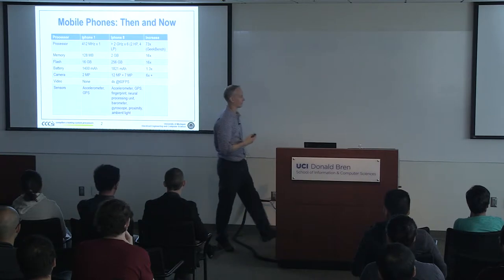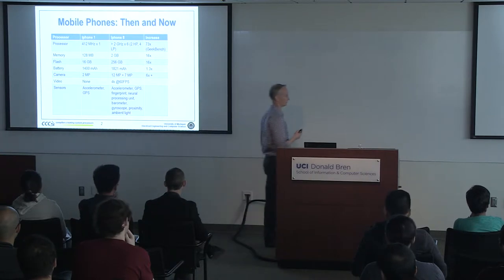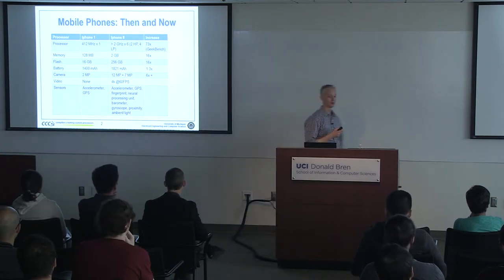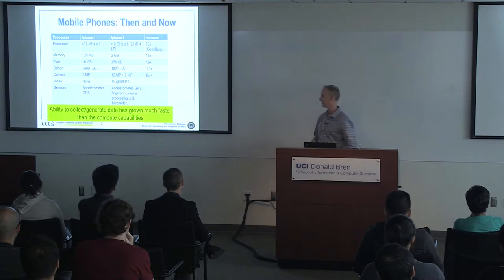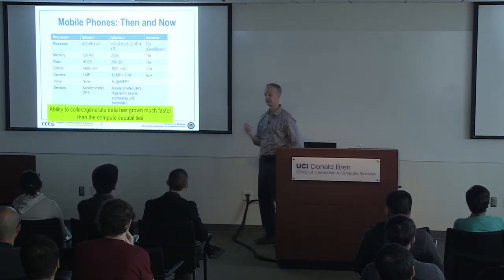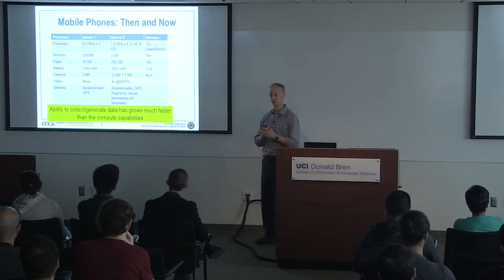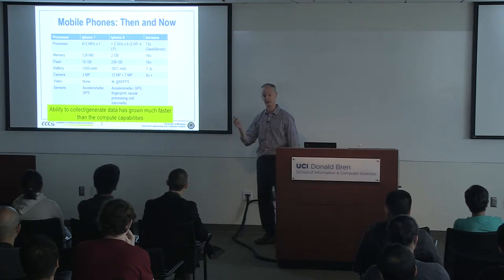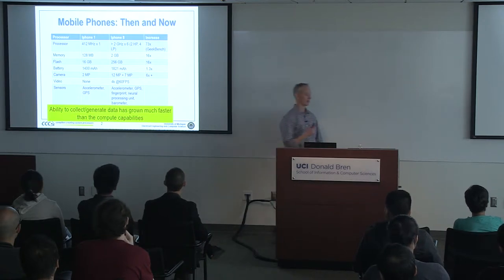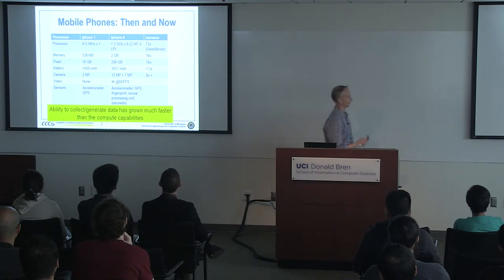What I'm going to argue is that even though performance has improved by 73x, our ability to collect and generate data — we're losing this battle. As we build computers, people's ability to create data is growing faster. So how do we deal with this?